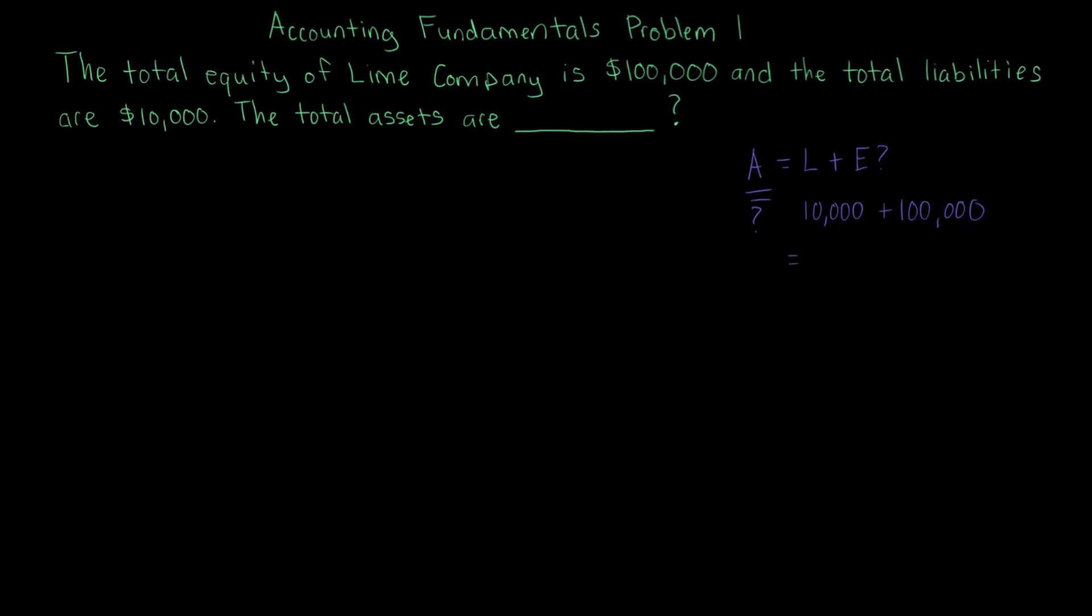Some of you might be looking at this and saying, wow, this is like algebra again. It kind of is, but the idea here is the balance sheet and the accounting equation, which is the central focus of all accounting. The asset side of the balance sheet, which is on the left side, equals the liabilities and equity side, which are on the right side of the balance sheet.